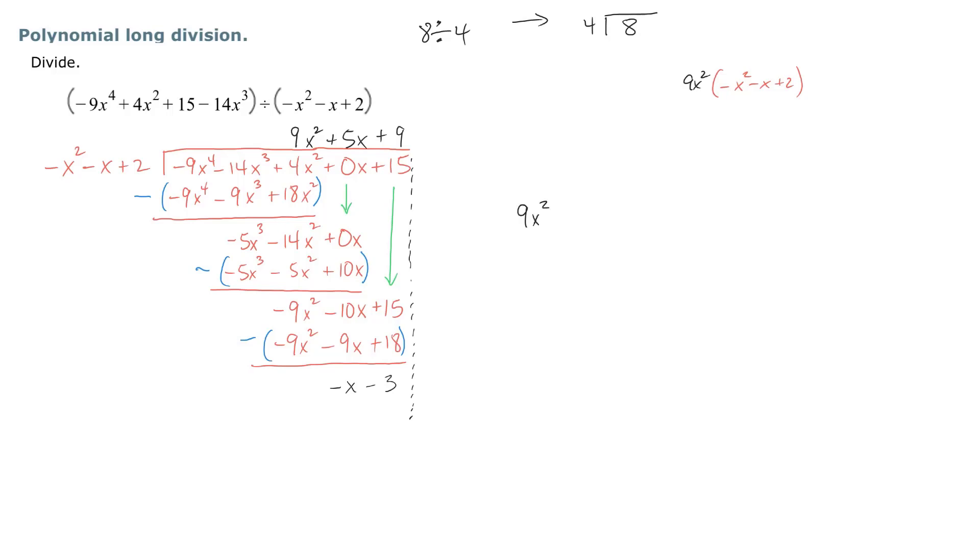Well, we take the 9x squared plus 5x plus 9. Take the quotient. And we're going to add the remainder and put it over its divisor. And the divisor is negative x squared minus x plus 2.